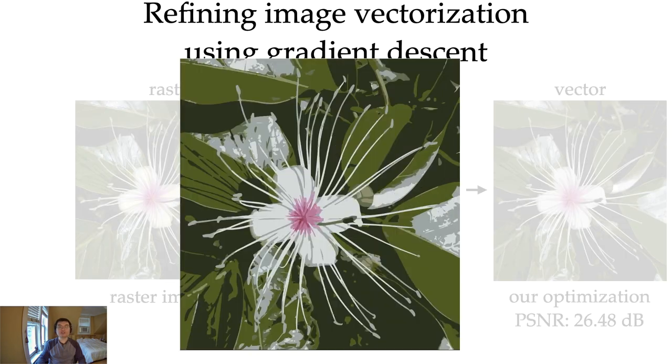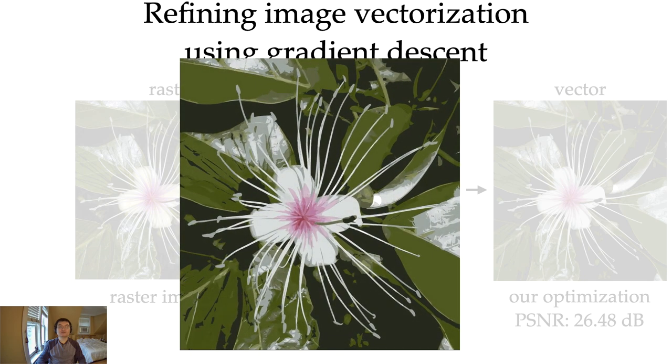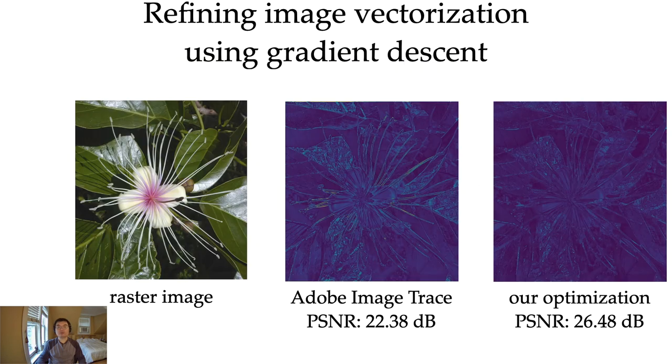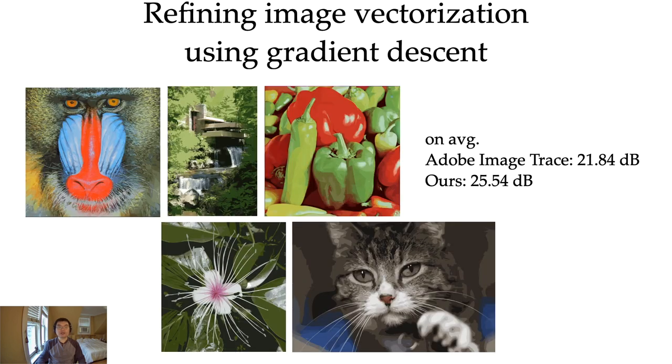Here's a video showing the optimization process. And here's an error map. We obtained much lower error both around the edges and textures. We tried it on a few images and found that on average we are better than Adobe Image Trace by about 3 to 4 dB in terms of PSNR.